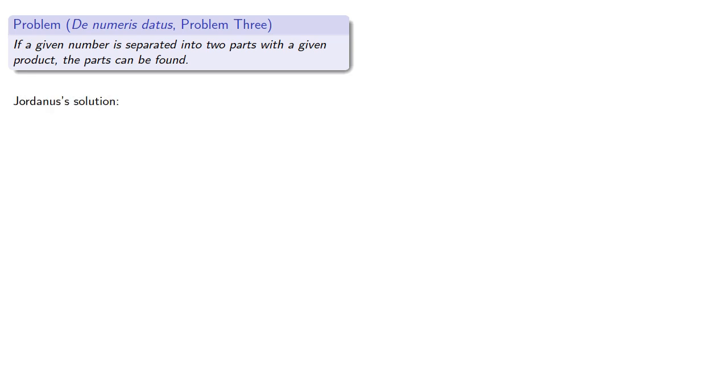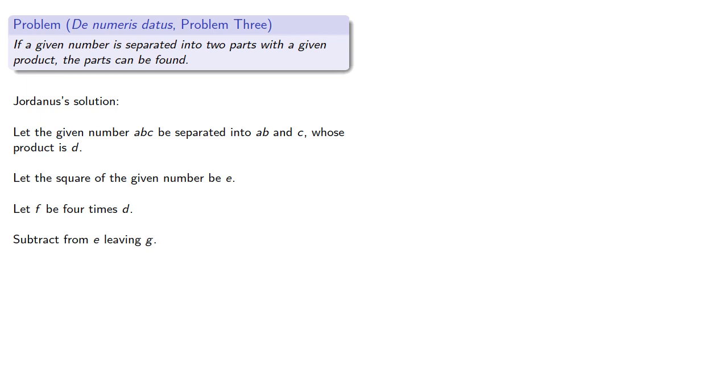Jordanus's solution, using his verbal algebra: let the given number ABC be separated into AB and C, whose product is D. Let the square of the given number be E. Let F be 4 times D. Subtract from E, leaving G. The square root of G will be B, the difference between AB and C.